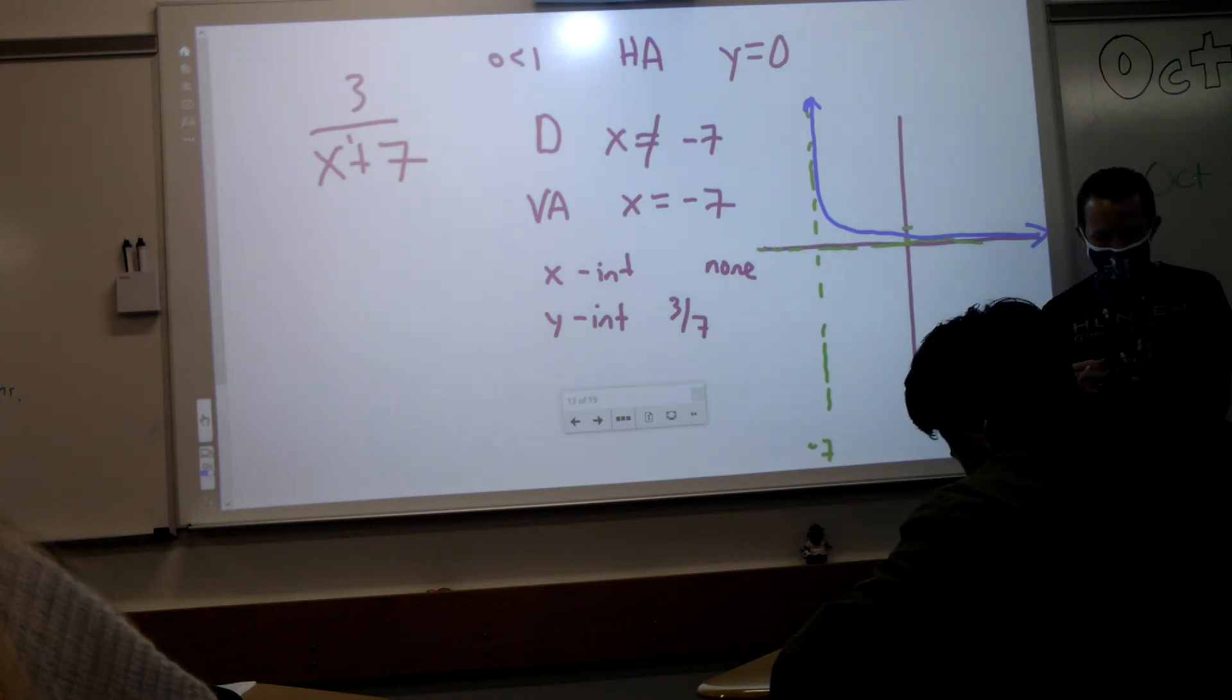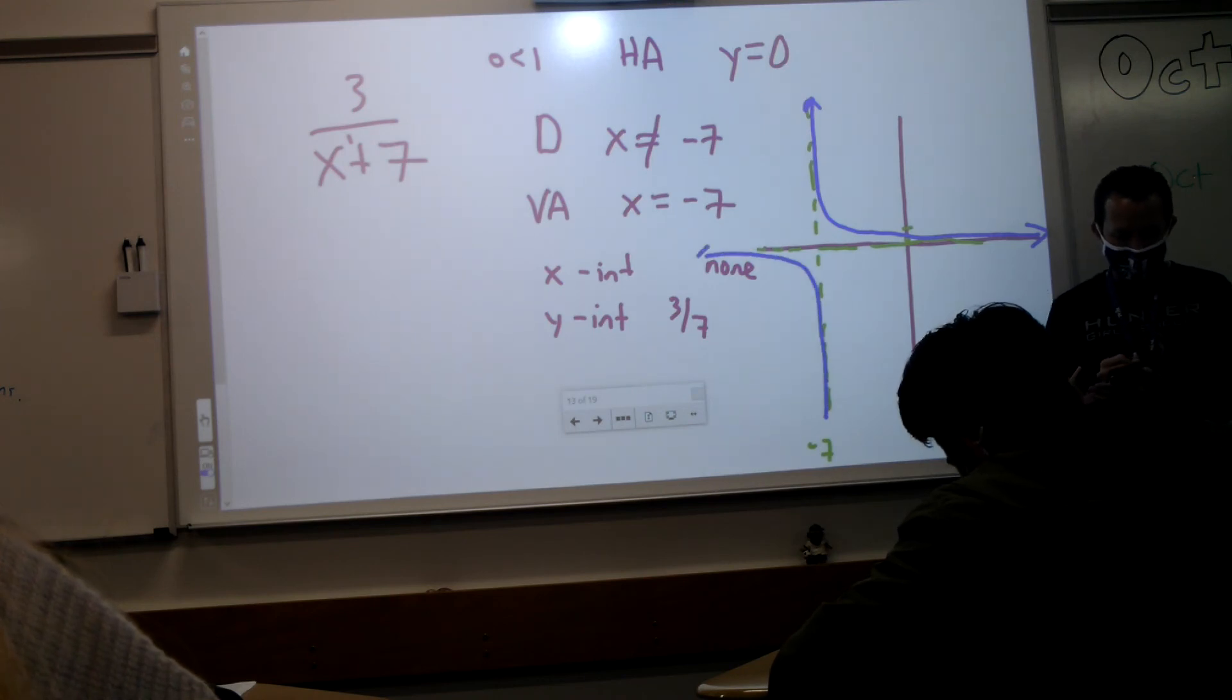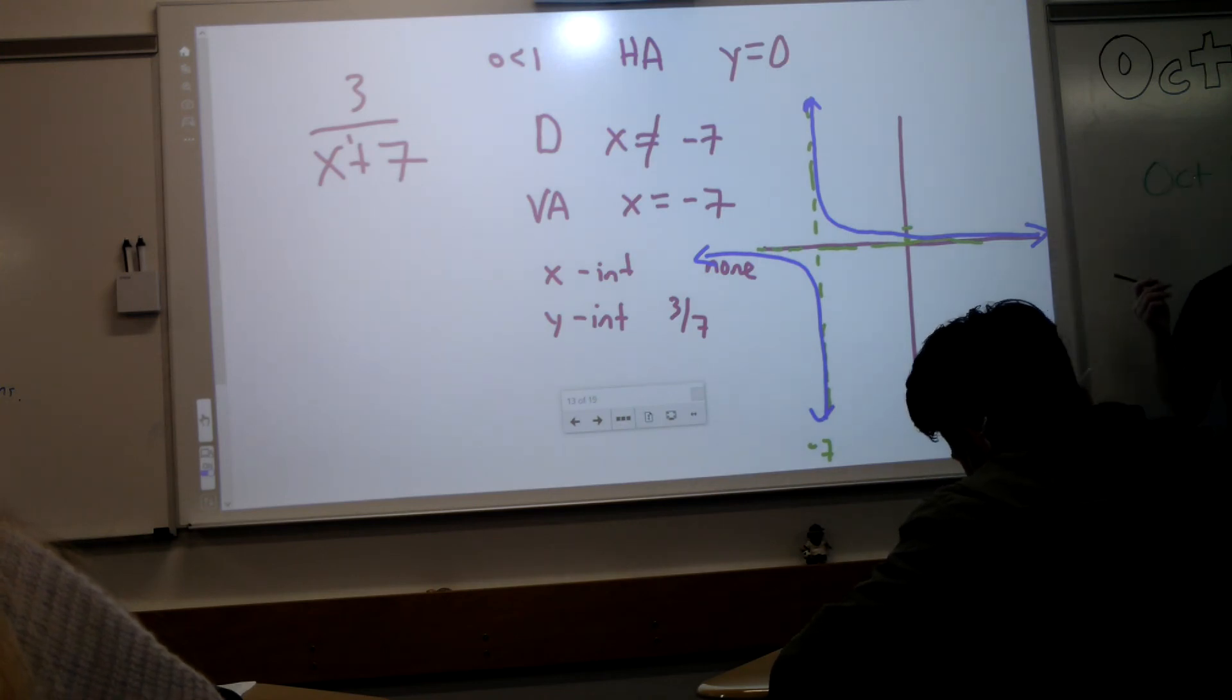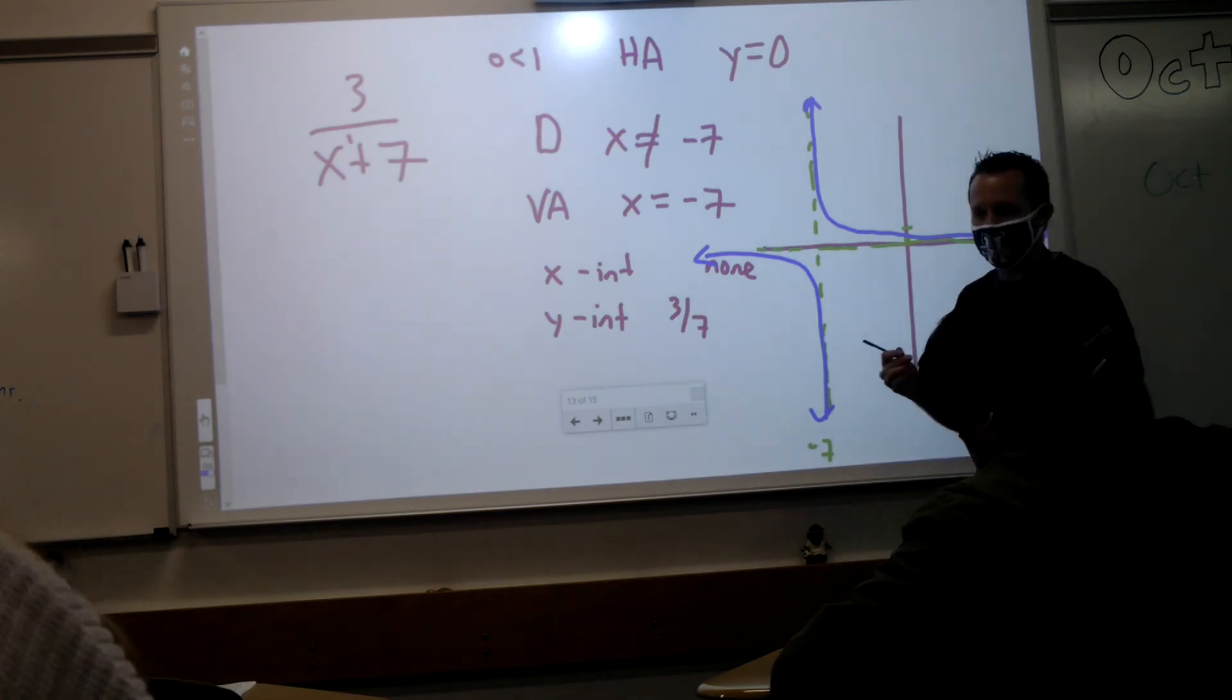Now, look at the vertical asymptote. If it's going up on that side, what is it doing on the other side? Going down, and there's your graph. That wasn't too bad, right? Compared to some of the ones we've been doing, these are a little easy.